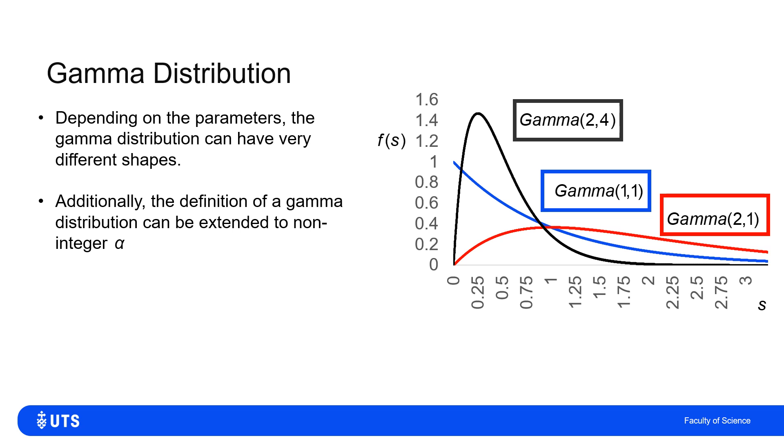Now, all of those, when I defined on the previous slide, I said if I'm adding an integer number of exponential variables. So if I had three exponential variables, or 10 exponential variables, then what I said on the previous slide was correct. But actually, I can relax the requirement for alpha to be an integer.